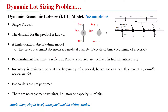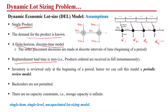To solve the dynamic lot sizing problem, we have certain assumptions. First, we consider a single product, not multiple products. Second, the demand of the product is known for every particular time period — it is dynamic but we know it. Third, the planning horizon is finite and consists of discrete time periods, such as four or five months. Fourth, the replenishment lead time is zero, exactly like the basic EOQ model, meaning if we place an order we receive it at the same time. This model can also be applied if lead time is constant.